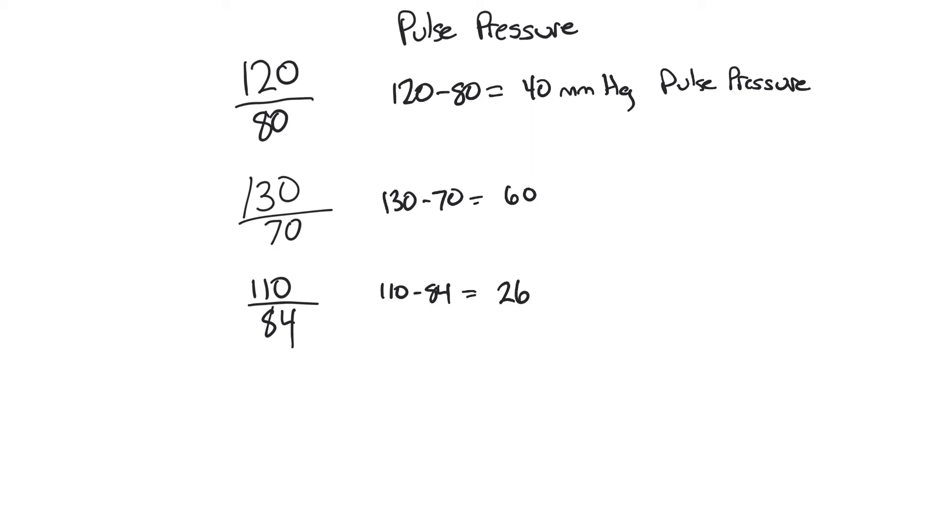So the 26 would be more narrow and the 60 would be wide compared to normal, compared to our average of 40. We see narrowing pulse pressures when we're going into shock.